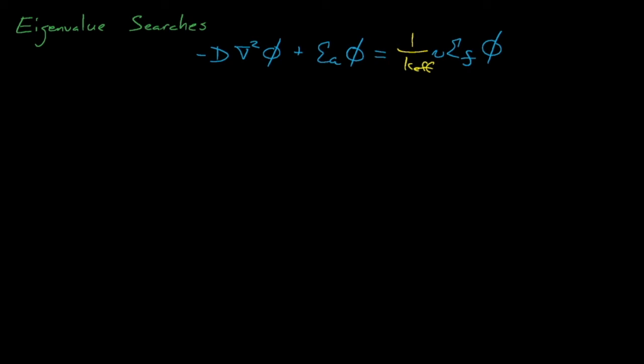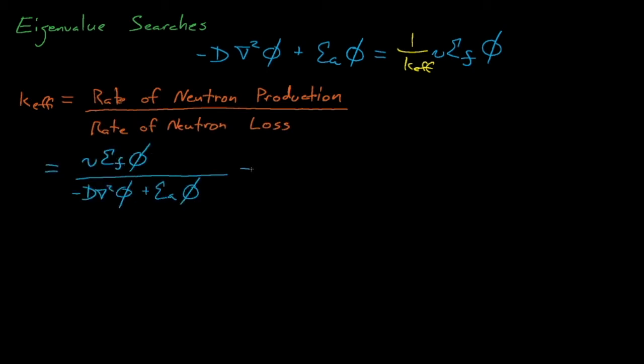K-effective, or the eigenvalue, is defined as the ratio of the rate of neutron production in a system to neutron loss, which is really just the ratio of the fission production operator, F, operating on the flux, divided by the neutron loss operator, M, also operating on the flux. We haven't really discussed operator notation in this course, but the very short version of this is that M equals the leakage term plus the neutron absorption term, and that the fission operator equals nu sigma fission. When these terms operate on the neutron flux, the flux is inserted inside of the brackets here, and we get the diffusion equation.